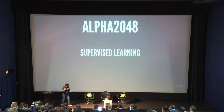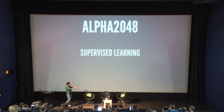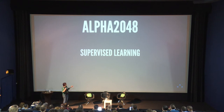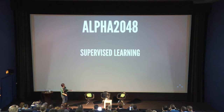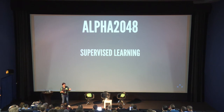I wanted to do supervised learning because if you already know what is good and what is bad, you can use supervised learning — it makes it easier to train the machine. With unsupervised learning, you don't have labeled data, so the data has no correct answer and the machine has to figure out the pattern itself.